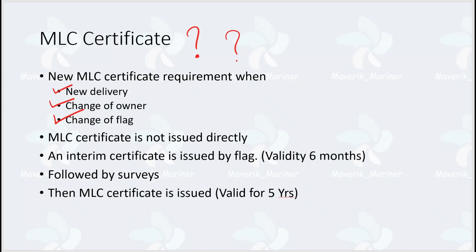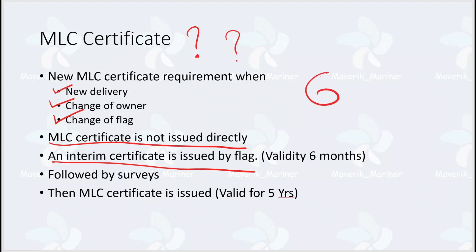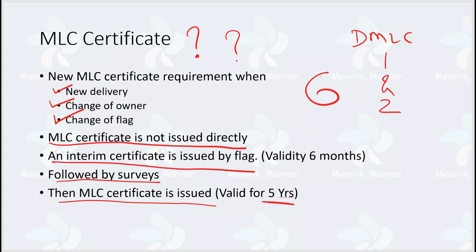The main MLC certificate is not issued directly — an interim certificate is issued by the flag, and this is valid for six months. In those six months, the ship must undergo various surveys pertaining to MLC 2006 guidelines. On completing the survey successfully, the flag issues the main MLC certificate. This main certificate is valid for five years. DMLC Part 1 and Part 2 are attached with the main MLC certificate.